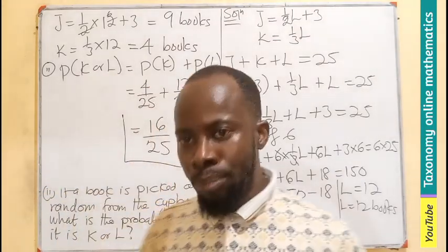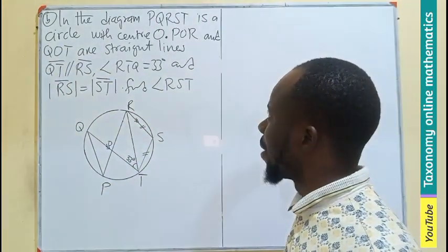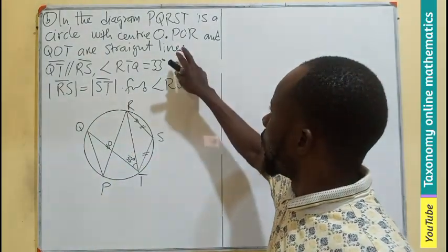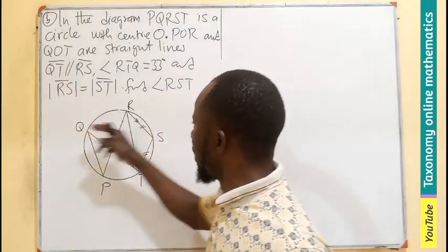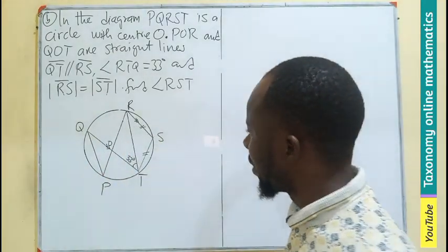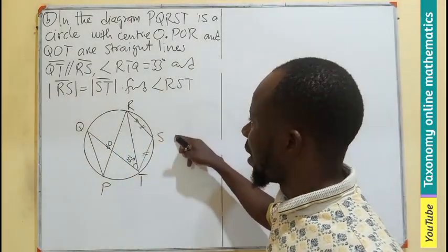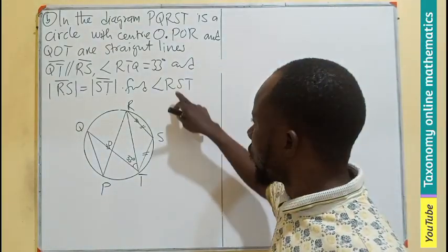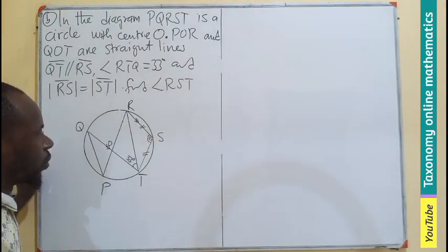Now for question 10b. In the diagram, PQRST is a circle with center O. POR and QOT are straight lines. QT and RS are parallel lines as shown. The length RS equals ST, meaning triangle RST is an isosceles triangle. We need to find the value of angle RST.